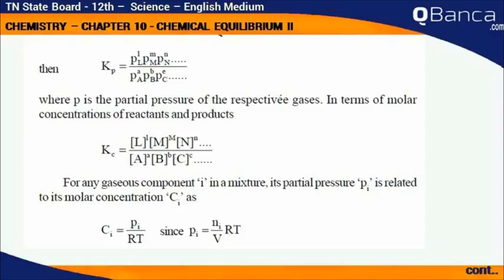In terms of molar concentration of reactants and products, Kc equals bracket L to the power l times bracket M to the power m times bracket N to the power n etc. divided by bracket A to the power a times bracket B to the power b times bracket C to the power c etc.